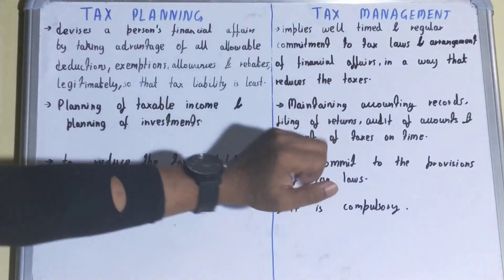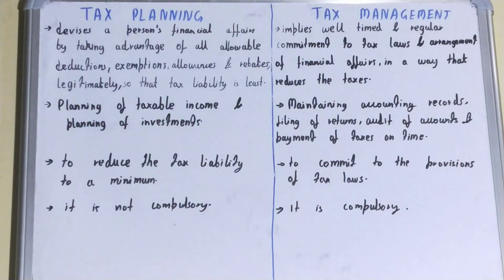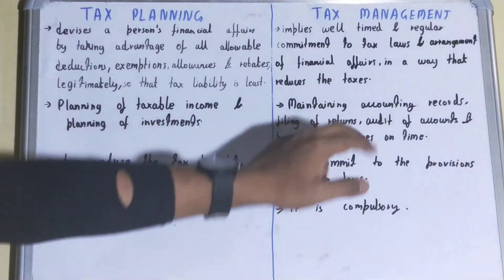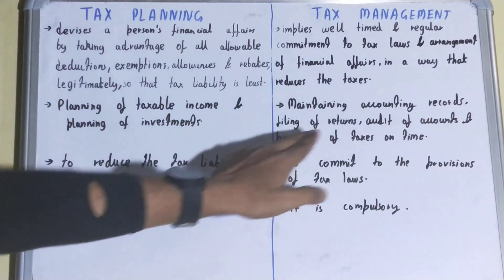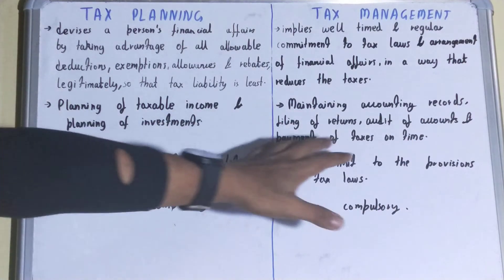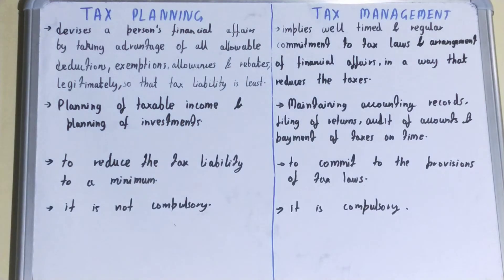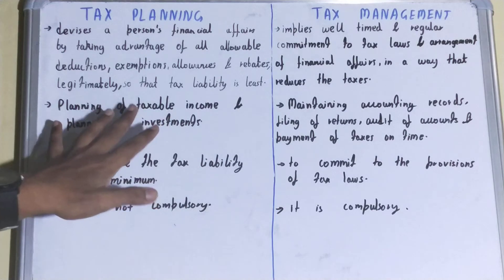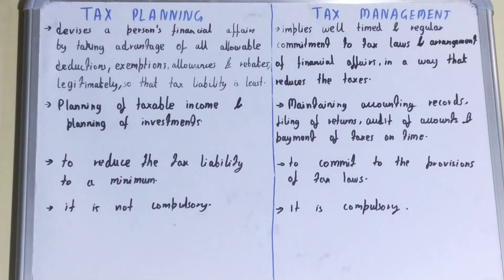Tax management involves maintaining account records, filing of returns, audit of accounts, and payment of taxes on time. It is concerned with the tax-paying process and keeping it in the best possible way, whereas tax planning involves planning of how we can reduce our tax liability.